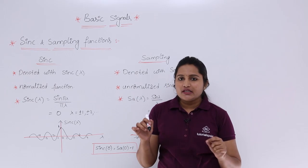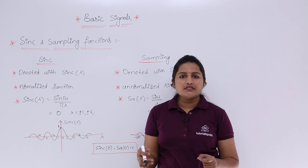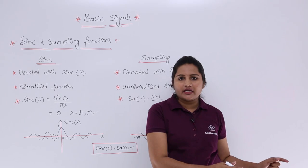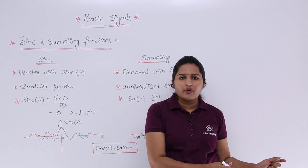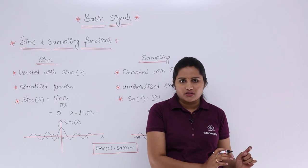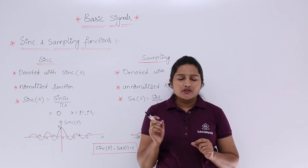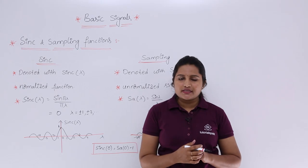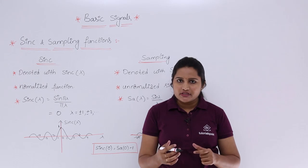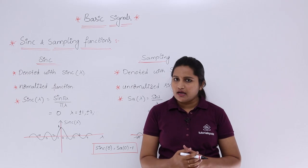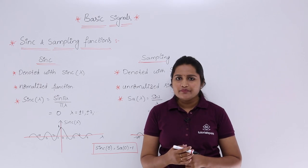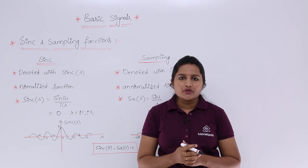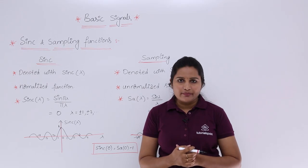In the options we will see answers in terms of sinc and sampling, but whatever we are getting in our working — whether in the form of sinc or cosine — we need to convert it. That conversion will be discussed later in the Fourier and Laplace transform sections. This has been a small description about sinc and sampling functions.